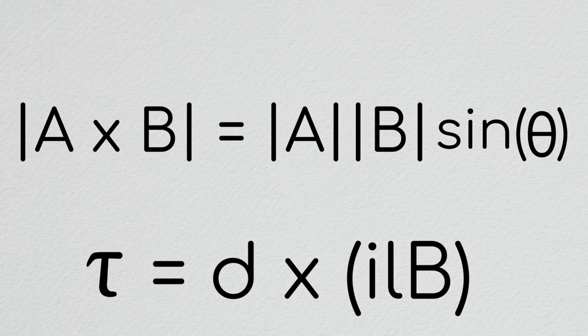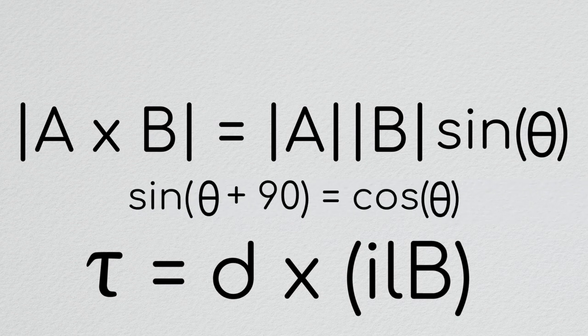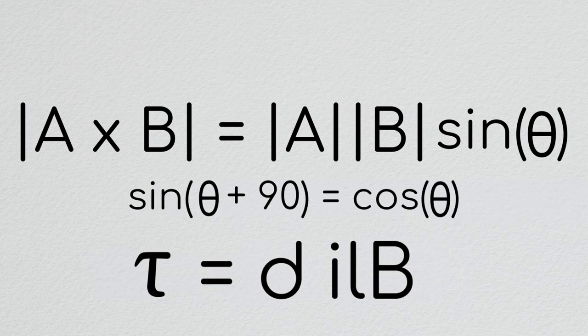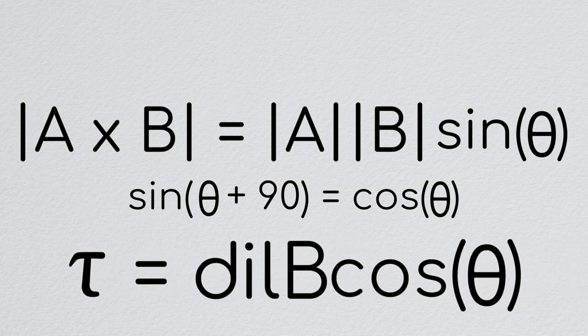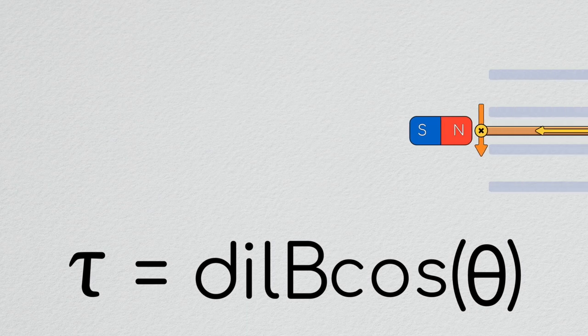For the second cross product, we can use the fact that the magnitude of a cross product equals the vector magnitudes times the sine of the angle between them. Noting that our force vector will lead our current vector by 90 degrees, we can approximate our earlier equation of torque to be equal to D I L B cosine theta.